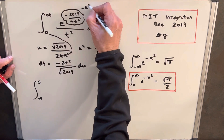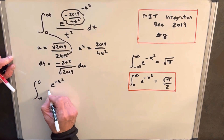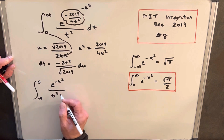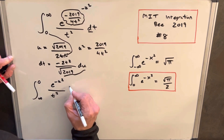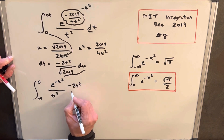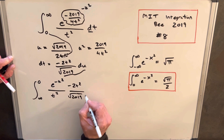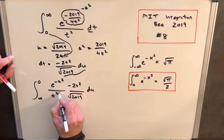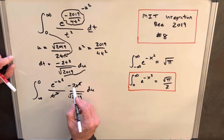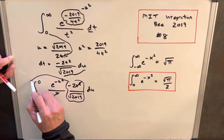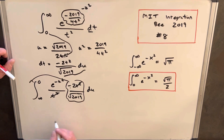This piece in the exponent is negative u-squared, so we'll have e to the negative u-squared over t-squared. Then we substitute in for dt, giving us minus 2t-squared over the square root of 2019, du. The t-squared cancels, and we can bring the constant out front, using the minus sign to reverse the boundaries.